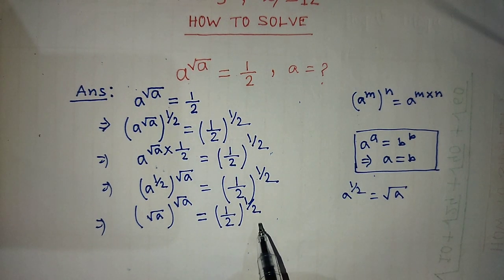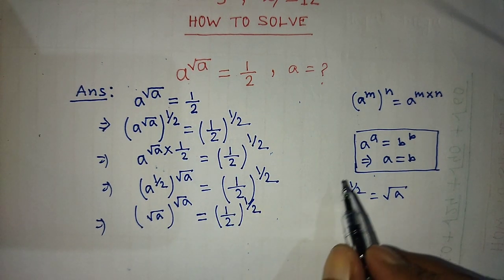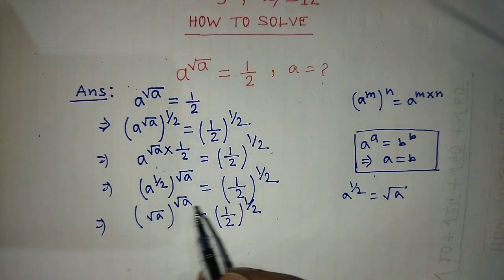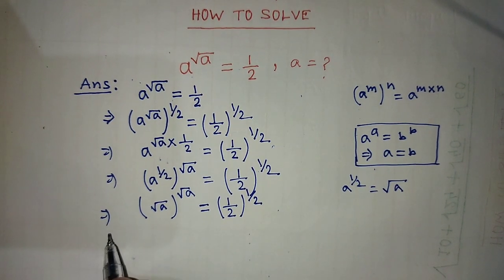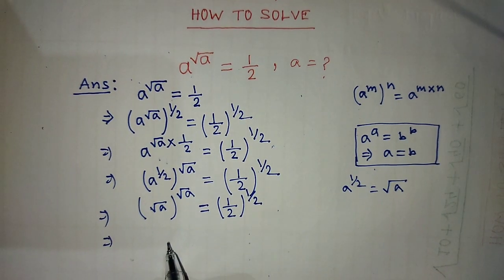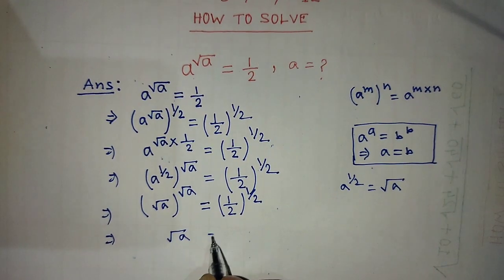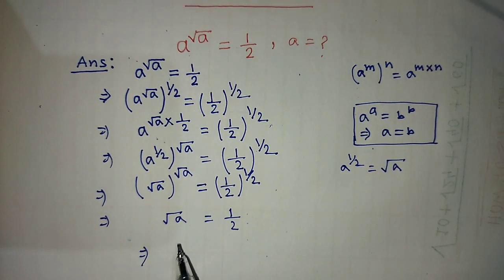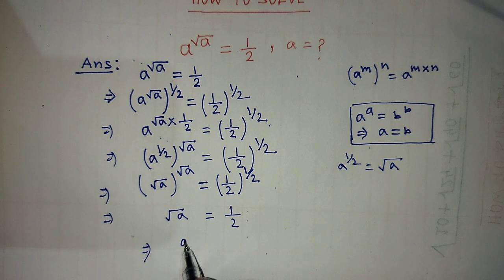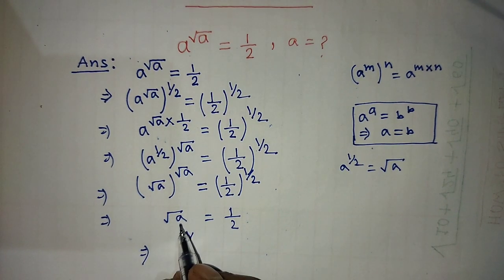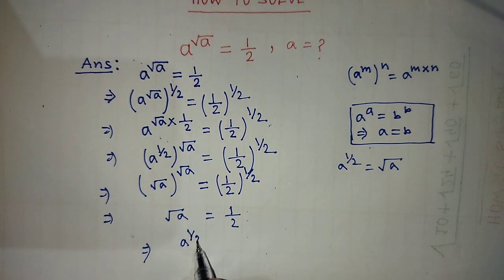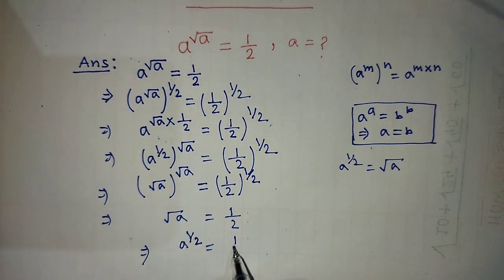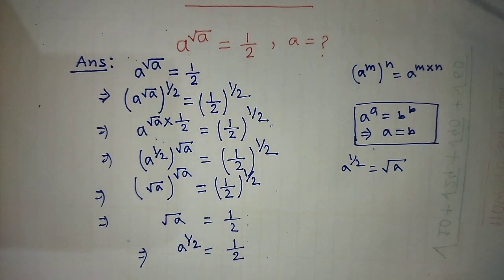To find the value of a from this equation, we apply this formula. After applying this formula, on the left hand side we have root over of a, and on the right hand side we have only half. So root over of a — that means a to the power half — is equal to 1 by 2.